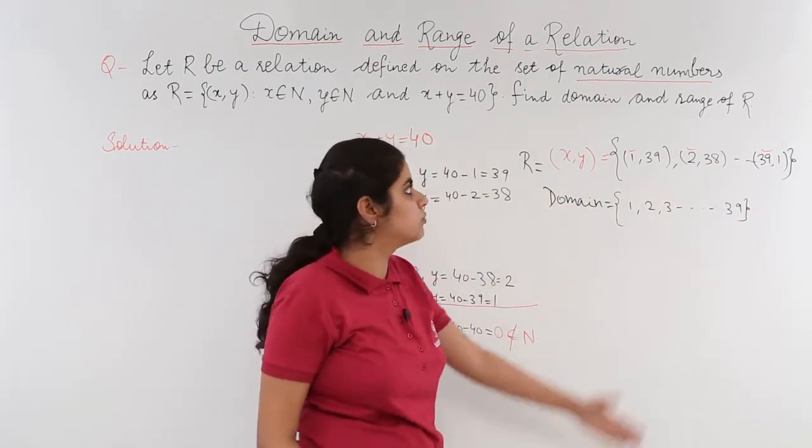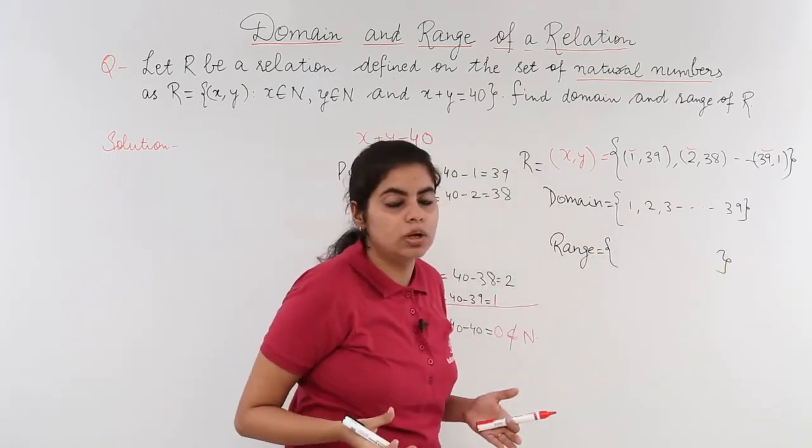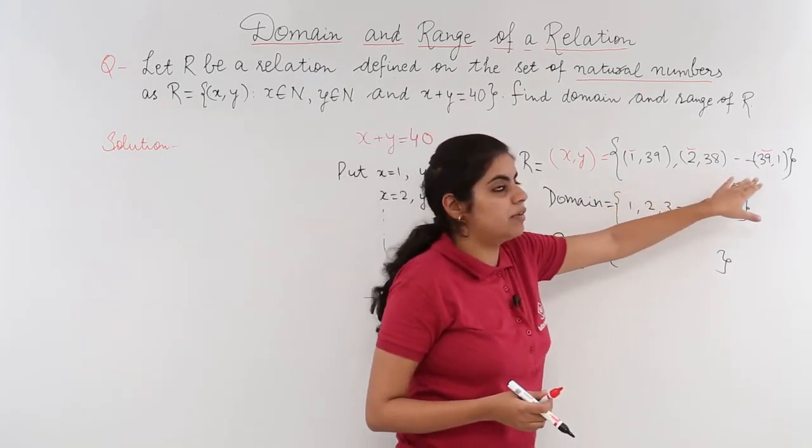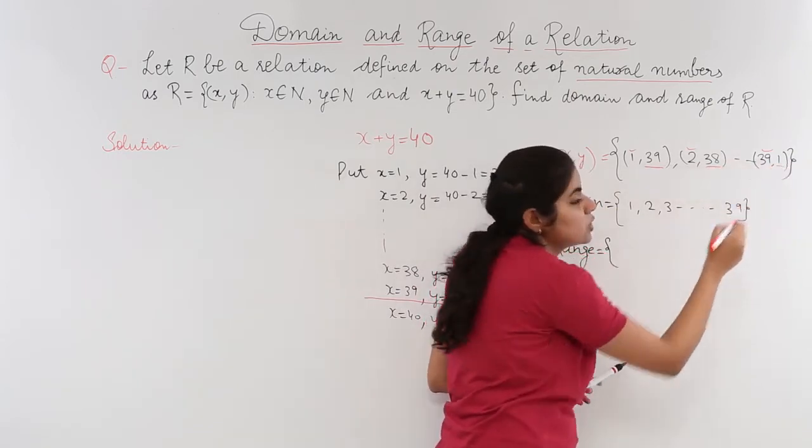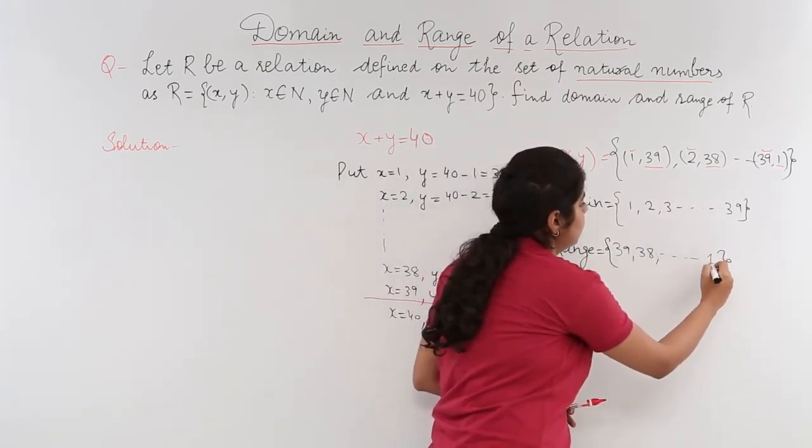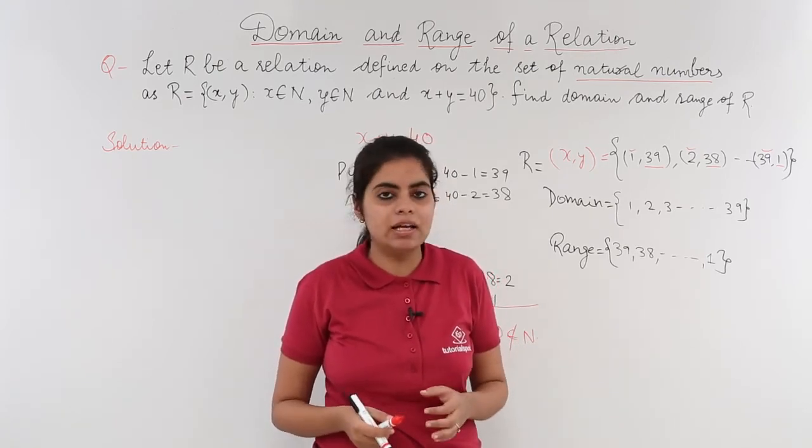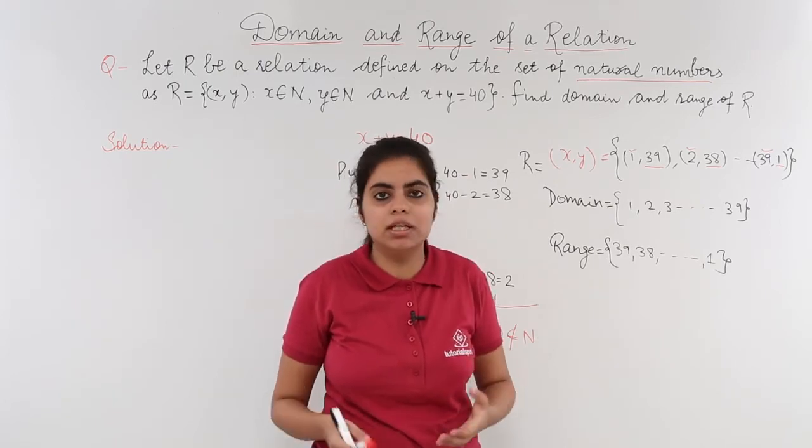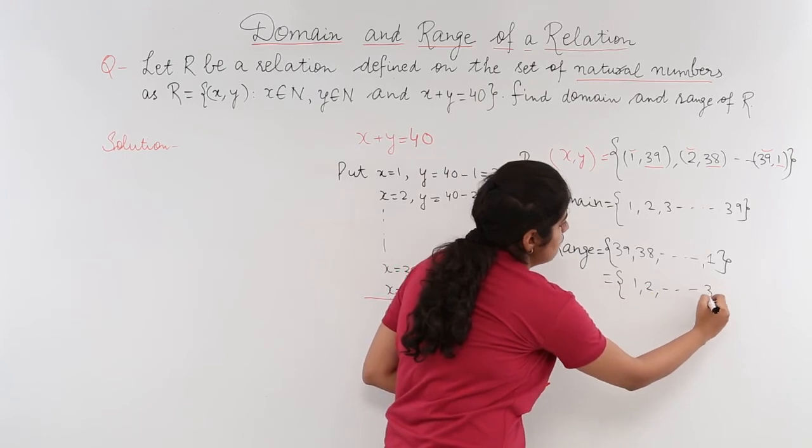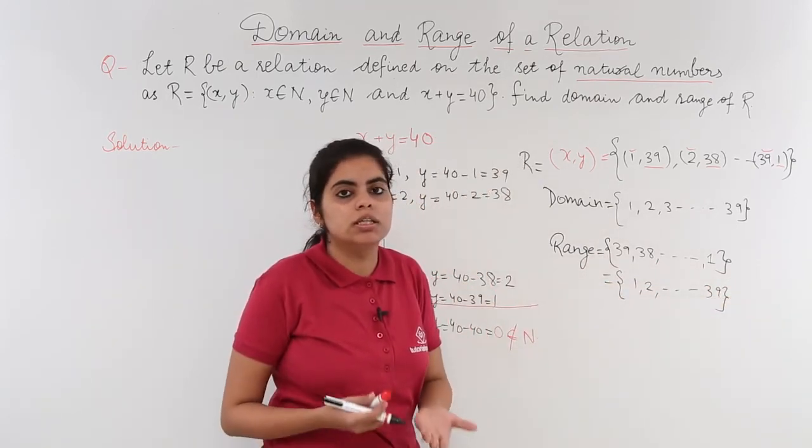But I don't have only to find domain, I also have to find range. So I write range. Let's see what is range equal to. Range is equal to the set of second values of any ordered pairs. The set of second values, that means I have to find the set of 39, 38 and so on till 1. So it will be nothing but 39, 38, 37, 36 and so on up till 1. This is the decreasing order and I know from class 11th that in the set, the order of the elements is immaterial. You can arrange it anyways, the order doesn't matter. So it is also equal to 1, 2 and so on till 39. Because I know that if I write the elements in decreasing order or increasing order, the order does not matter for a set.